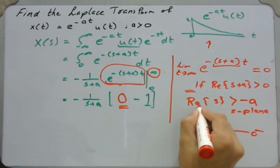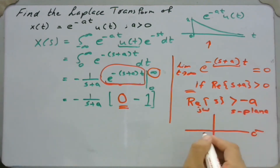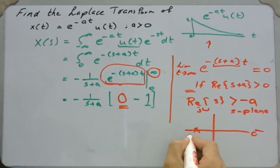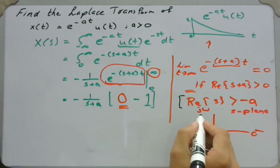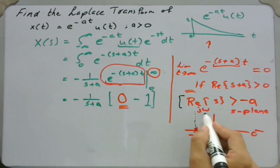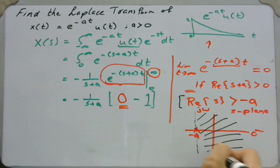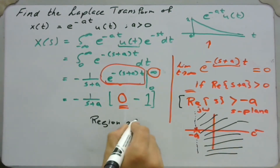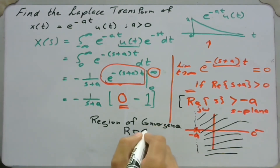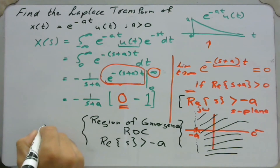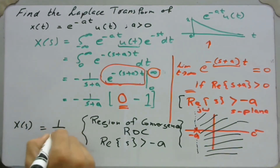If we plot the s-plane with sigma on the horizontal axis and j-omega on the vertical axis, we have a value at minus a on the left side — since a is positive, minus a is on the left. Drawing a vertical line at minus a, the region of convergence is everything to the right of that line, meaning the real part of s is greater than minus a.